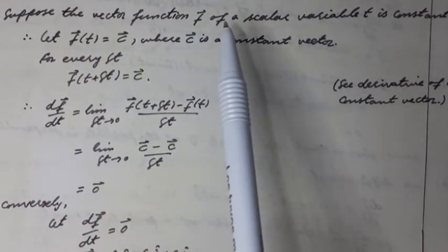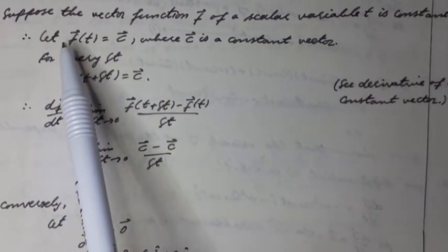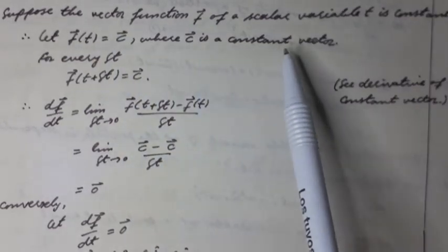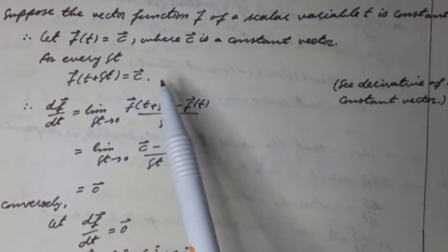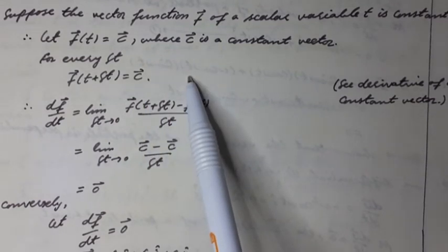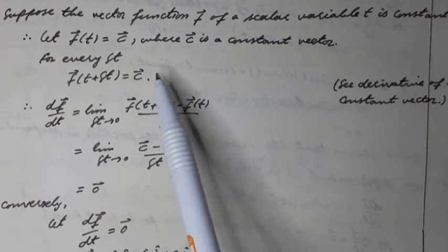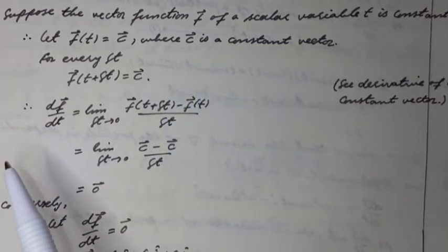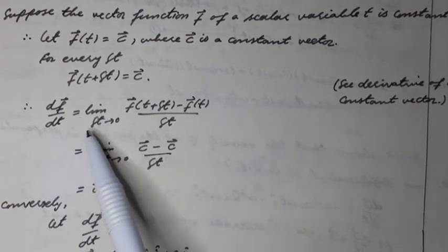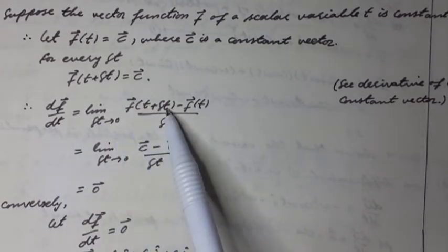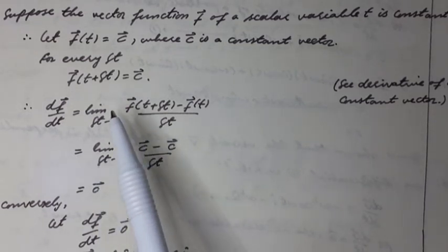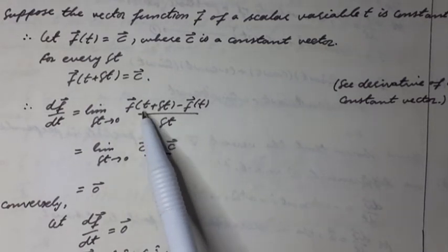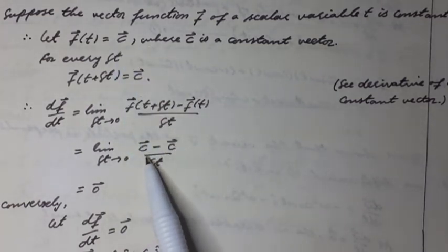Proof: Suppose the vector function f of a scalar variable t is constant. Therefore, let f vector of t equal c vector, where c vector is a constant vector. For every delta t, f vector of t plus delta t is equal to c vector, because delta c vector is equal to zero. Because df vector over dt is equal to the limit as delta t tends to zero of f vector of t plus delta t minus f vector of t, over delta t. This equals the limit as delta t tends to zero of c vector minus c vector over delta t, which is equal to zero vector.